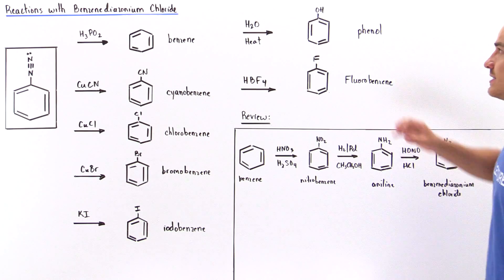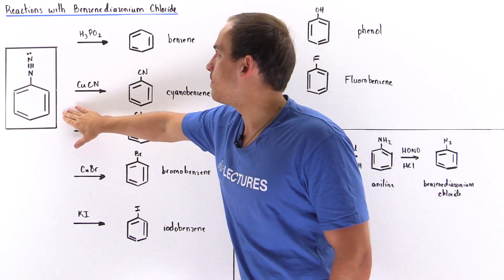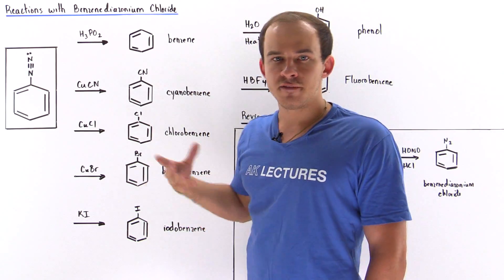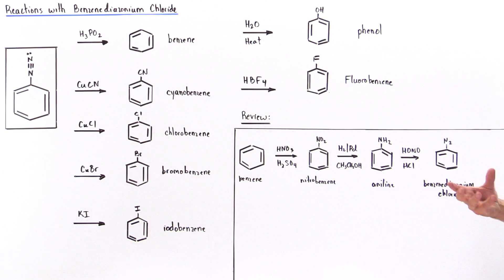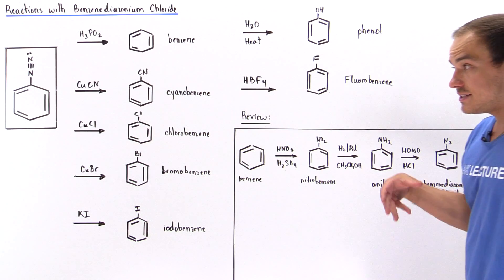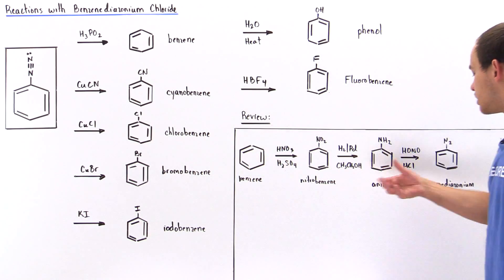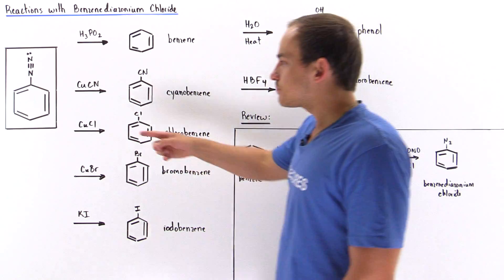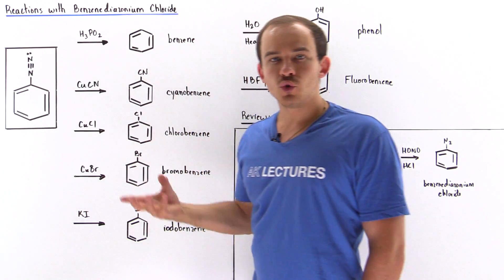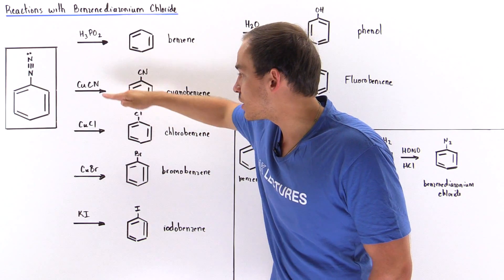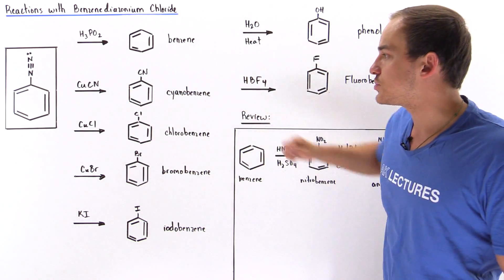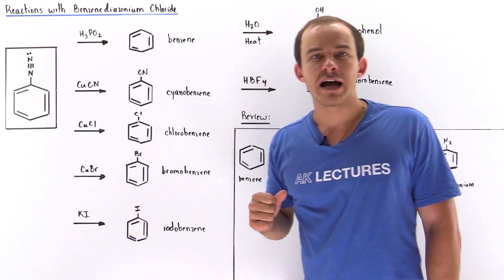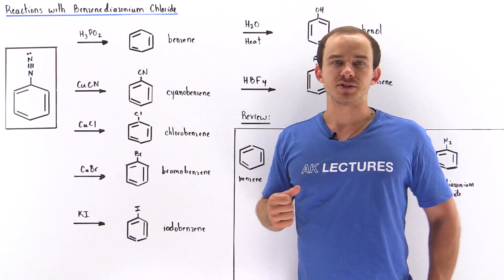Finally, if we take benzene diazonium chloride and mix it with water in the presence of heat, we produce the phenol molecule. We can see how the production of benzene diazonium chloride gives us a very useful compound, because we can use these reaction pathways to produce many important benzene-containing compounds.